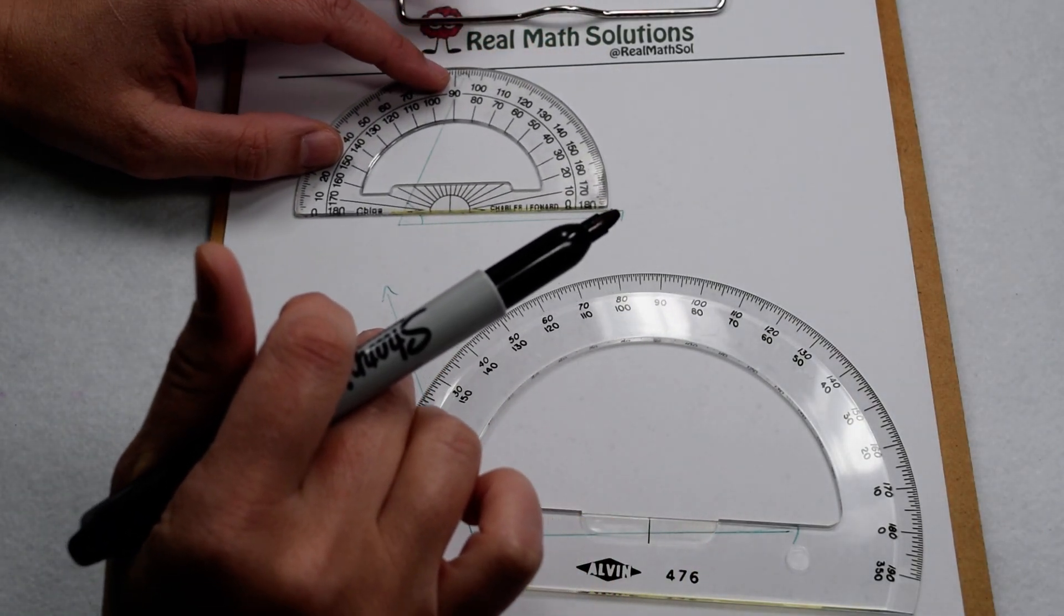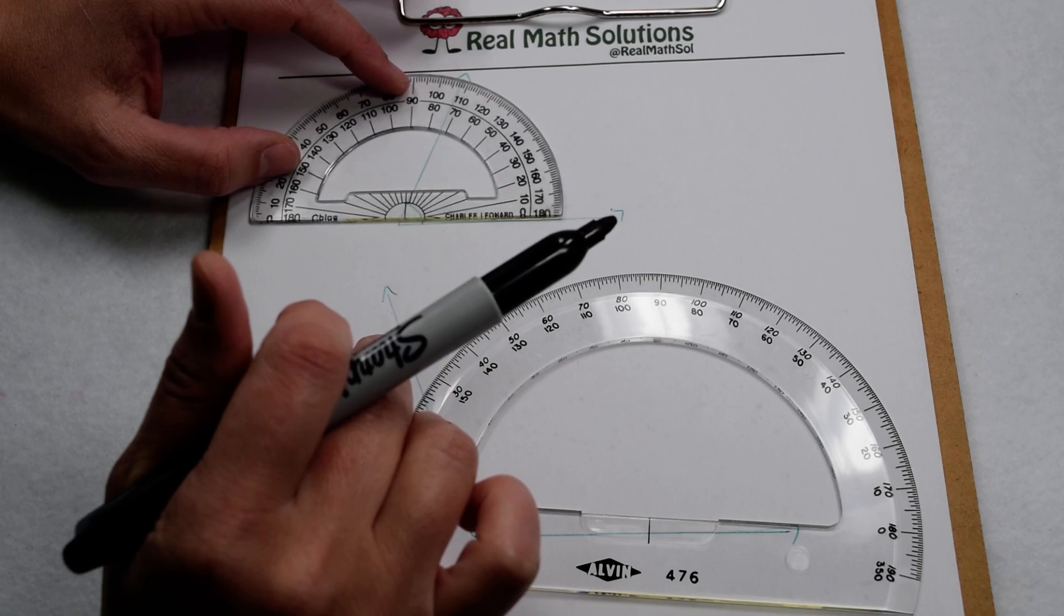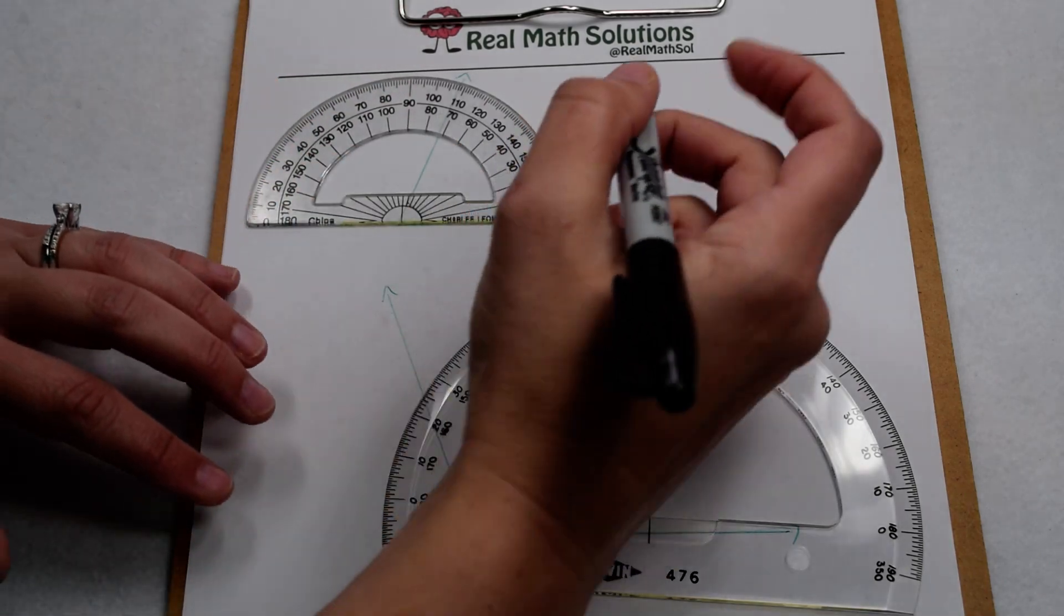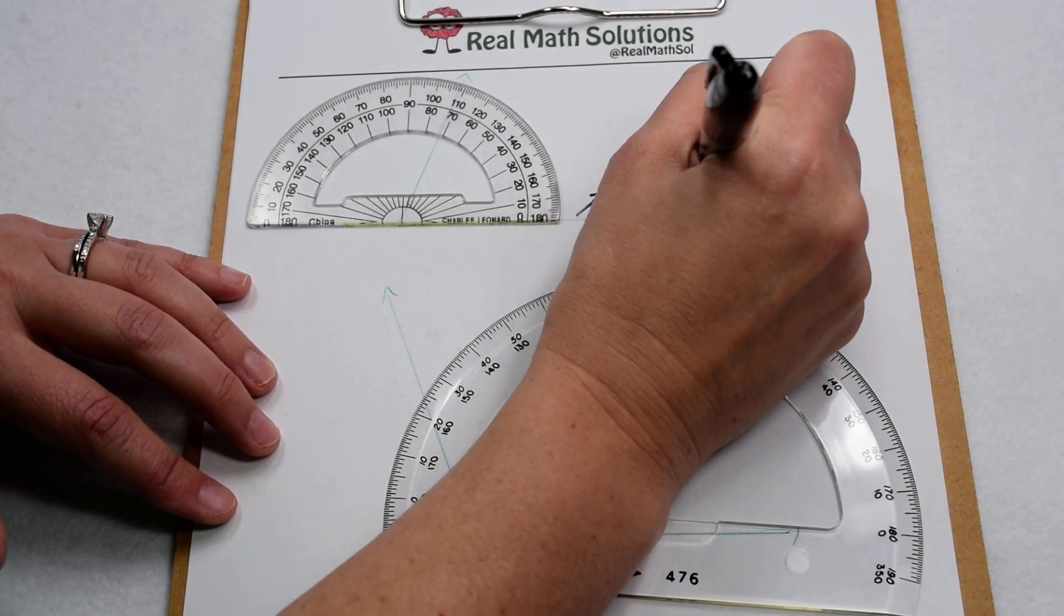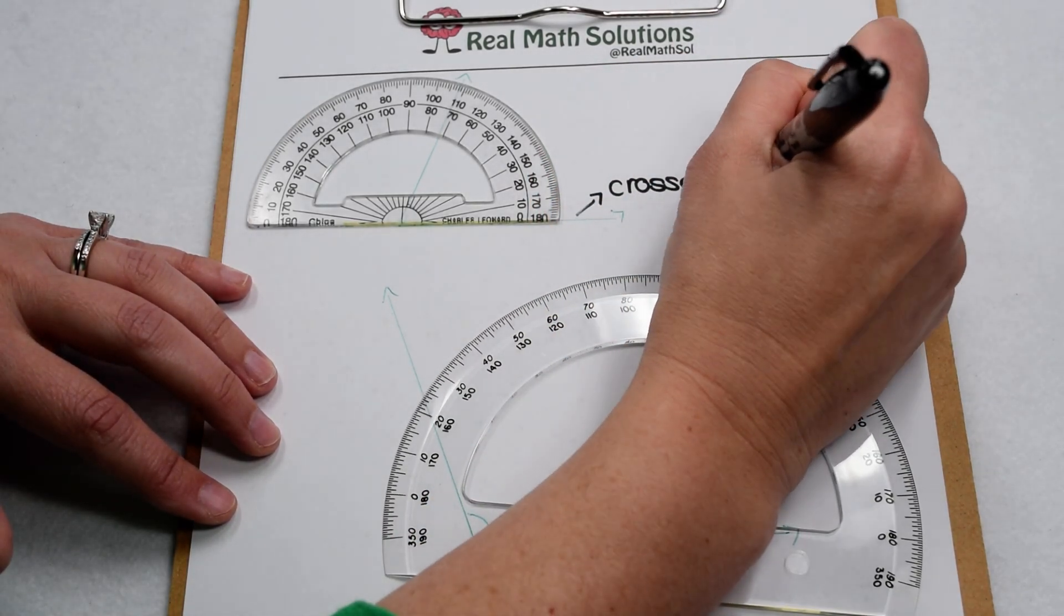So that means the key is we have to line everything up at zero degrees. We want this bottom ray to cross our protractor at zero degrees. That's what we're looking for to figure out where to put our protractor. It has to cross at zero degrees.